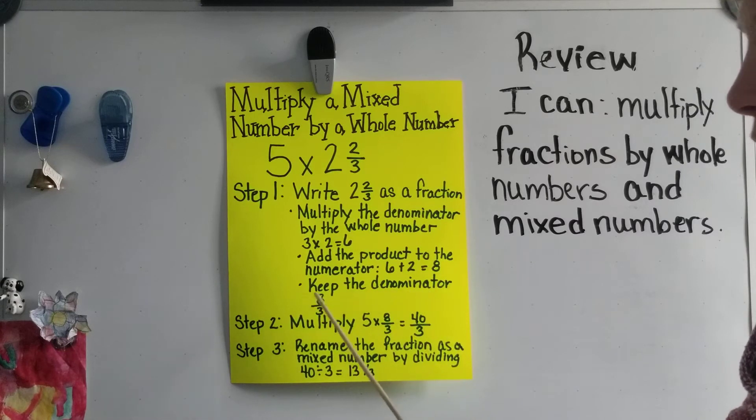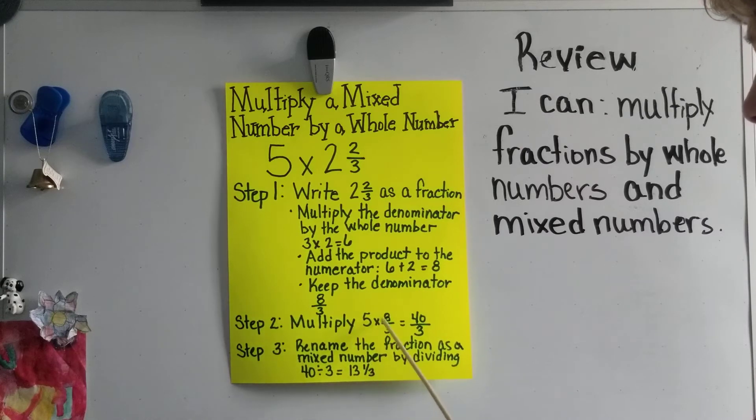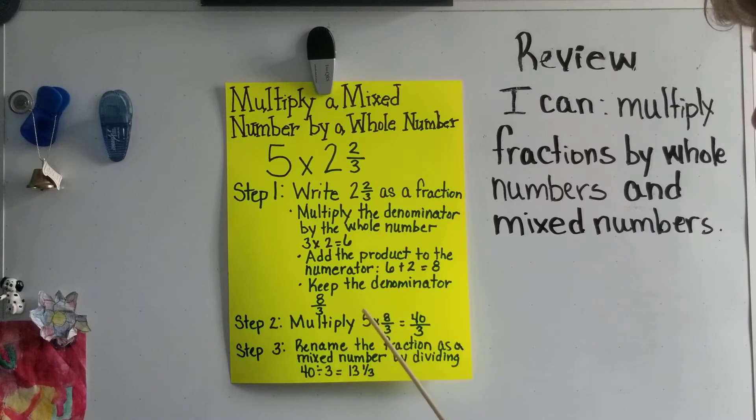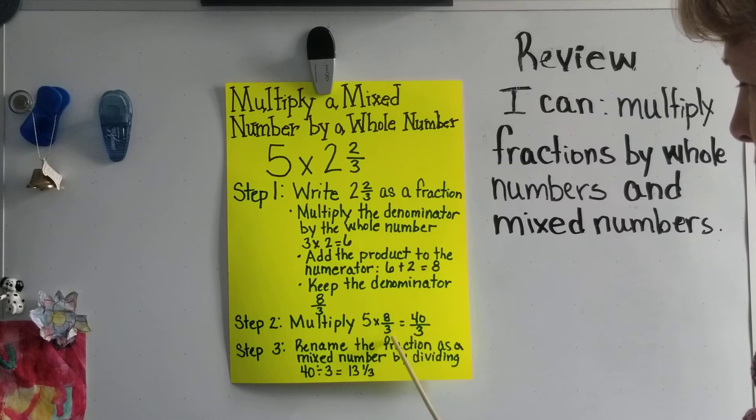So we end up with eight-thirds. The second step is to multiply five times eight-thirds. So when we do that, we just take five times our numerator, which is eight, and we keep our denominator of three.